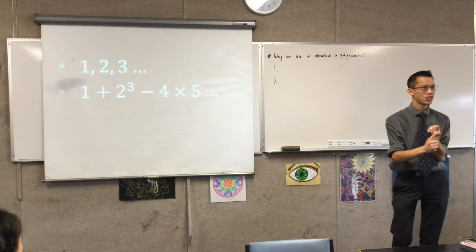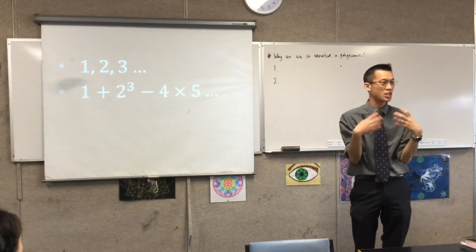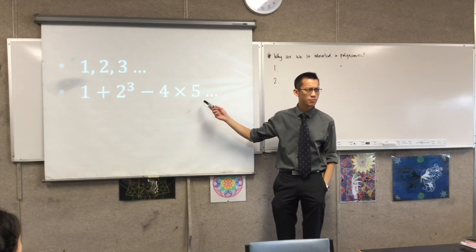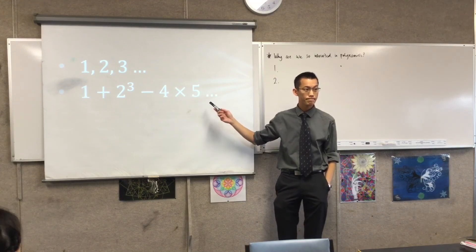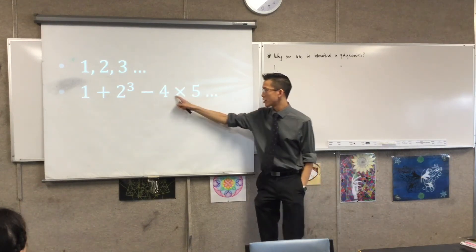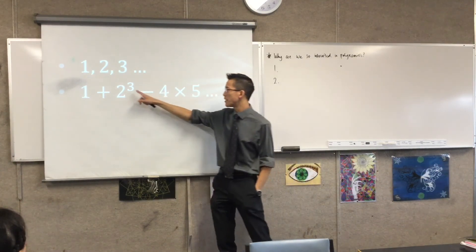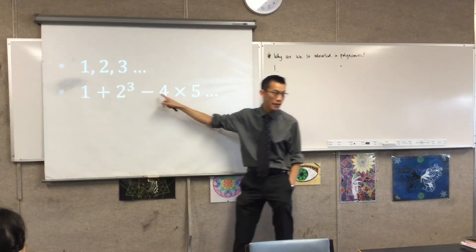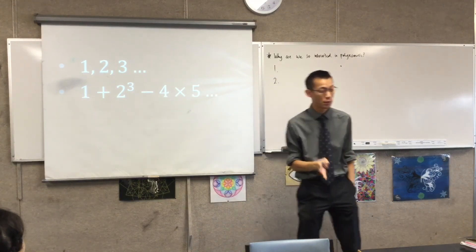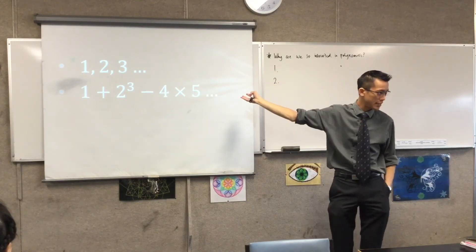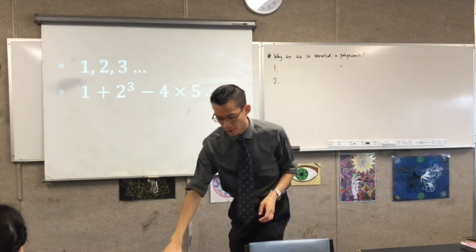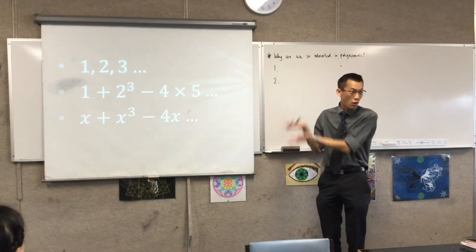Everything starts with addition. Subtraction is just a specialized form of addition — it's the inverse. Multiplication is just repeated addition, and exponentiation is just repeated multiplication. So these are all forms from just the simplest possible operation. That's arithmetic. But the next step is: what if you don't know what the numbers are? And that's how algebra is born. And ta-da — polynomials!